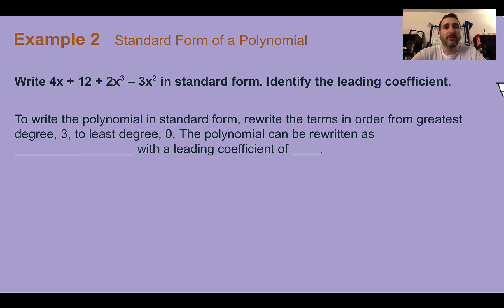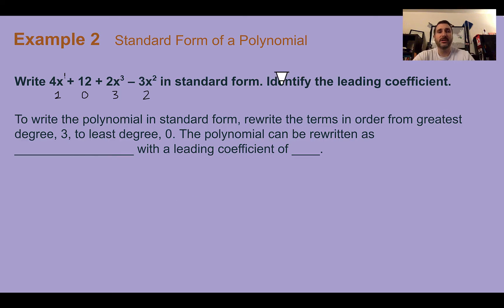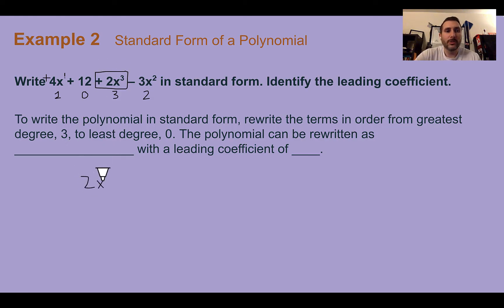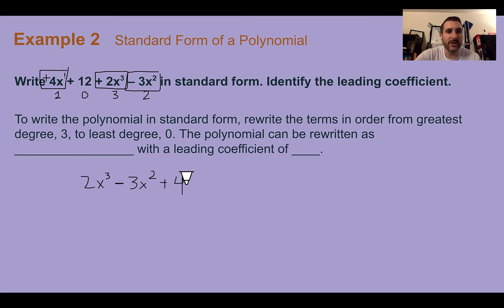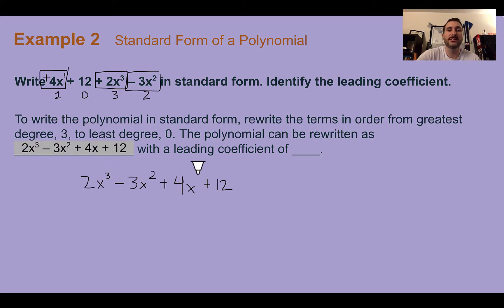Example 2: Standard form of a polynomial. Write 4x plus 12 plus 2x cubed minus 3x squared in standard form and identify the leading coefficient. To write in standard form, we rewrite in order from greatest to least degree. The degrees are: 4x is degree 1, 12 is degree 0, 2x cubed is degree 3, and negative 3x squared is degree 2. So in standard form: 2x cubed minus 3x squared plus 4x plus 12. The leading coefficient is 2.